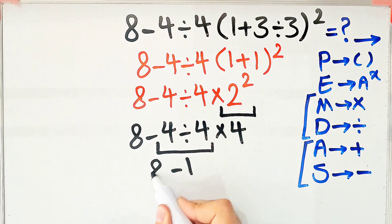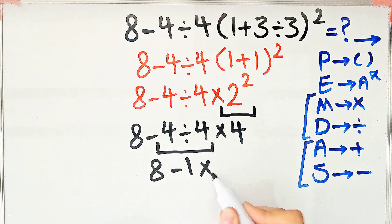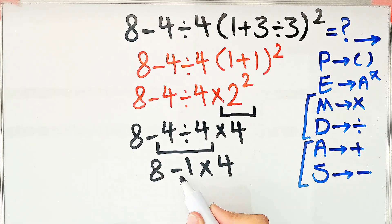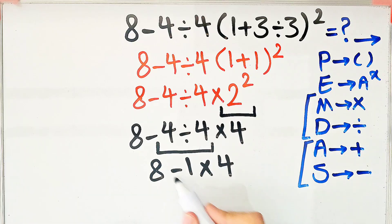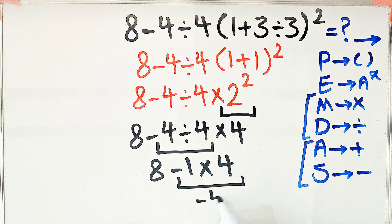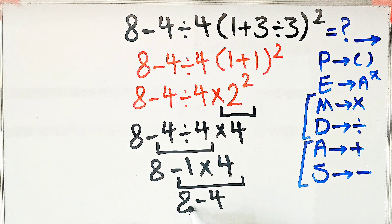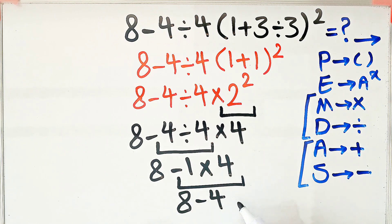Now we have 8 minus 1 times 4. We have subtraction and multiplication. First we do this multiplication because the multiplication has higher priority than subtraction. Negative 1 times 4 equals negative 4, and 8 minus 4 equals 4. The final answer of this question equals 4.